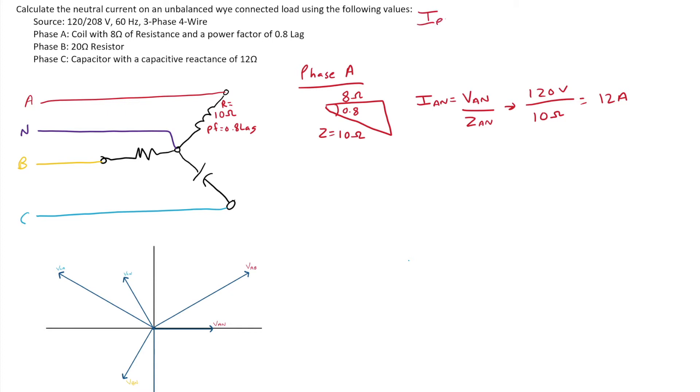Which we also know that in a Y circuit, I phase equals I line. So it is also my line current for phase A. And my theta for that, my phase angle is a 36.9, but I'm just going to say 37 degree lag.